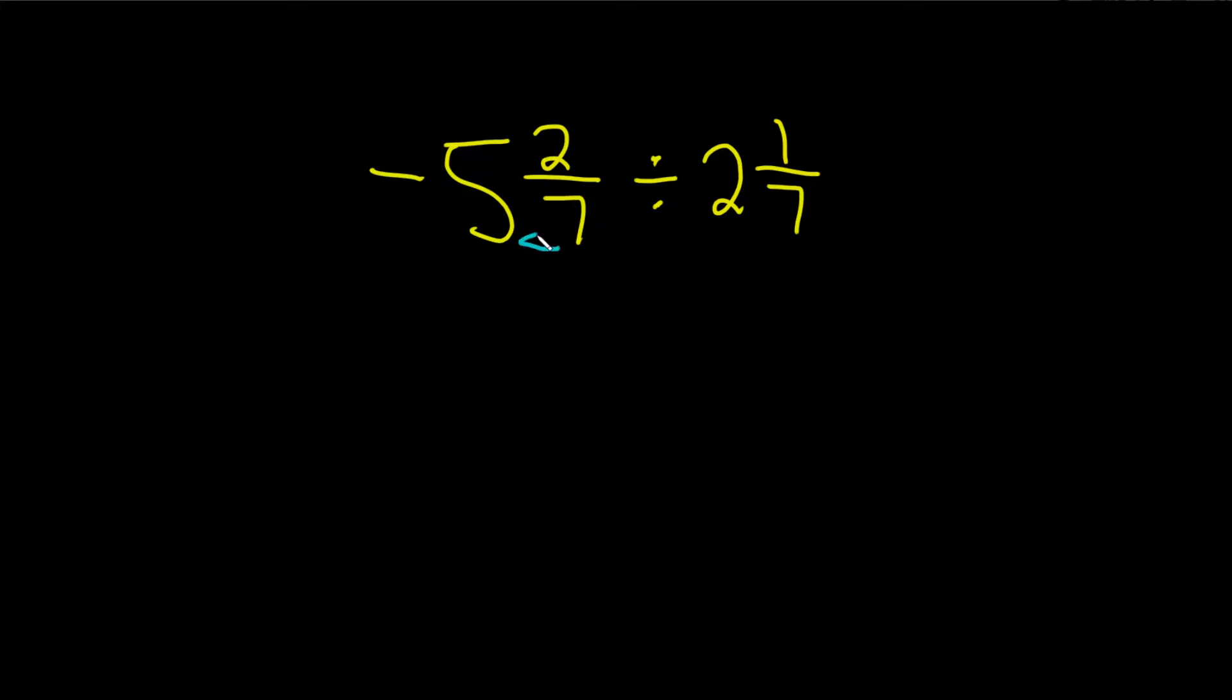You take the 7 and you multiply it by the 5. 7 times 5 is 35. Then you just add the top number, so plus 2. It's going to give us 37. So that goes up top, 37. You write it over 7.